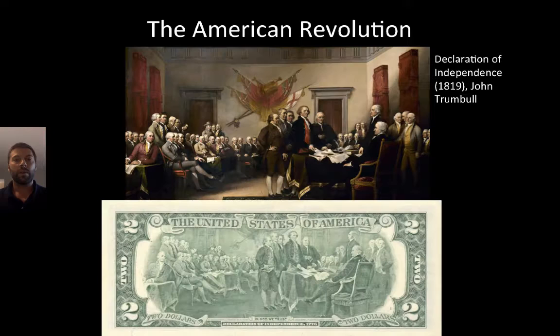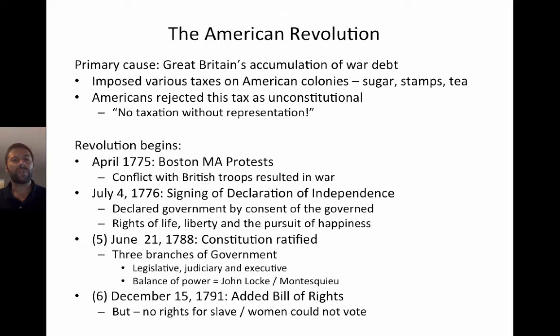Let's talk first about the American Revolution. Here we have a depiction of the signing of the Declaration of Independence by John Trumbull — an oil on canvas painted in 1819. You'll notice that painting is actually on the back of the $2 bill. The primary cause of the American Revolution was economic, as a result of Great Britain's accumulation of war debts.